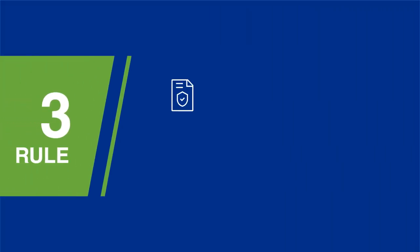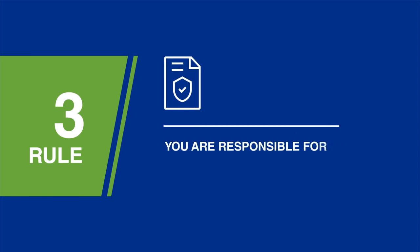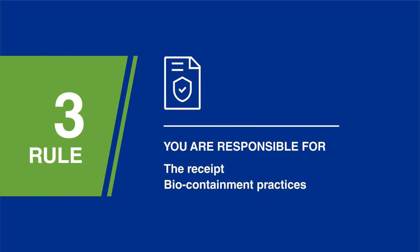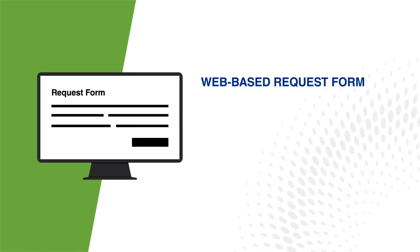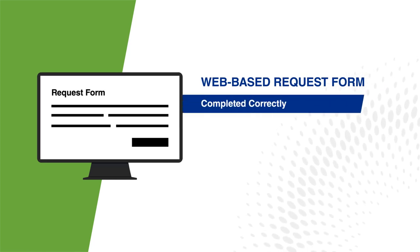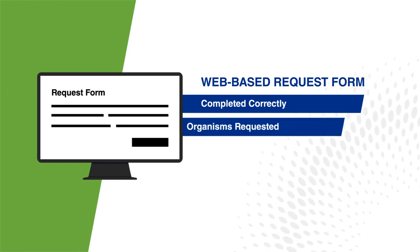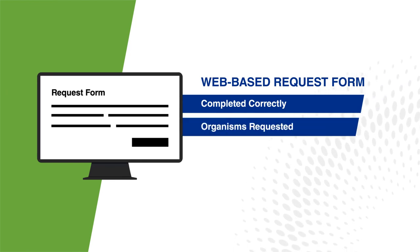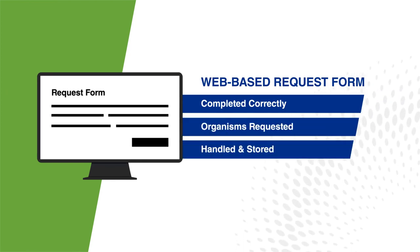Rule 3: By obtaining this domestic transport permit, you are personally assuming the responsibility for the receipt, the biocontainment practices, and the secure storage of the specific organisms as listed on the permit. Rule 4: This tutorial will orient you to the web-based request process and will help to ensure that the permit application is completed correctly, including the types of organisms requested and how they will be handled and stored.